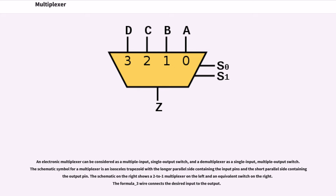The schematic on the right shows a 2 to 1 multiplexer on the left and an equivalent switch on the right. The formula underscore 3 wire connects the desired input to the output.